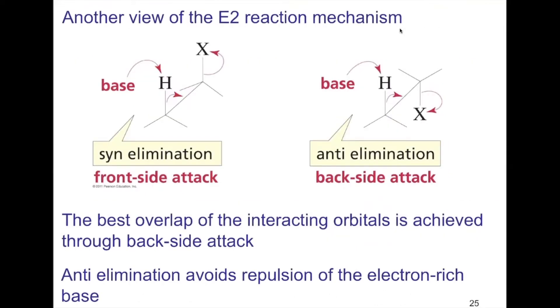Looking at the sawhorse projection might help you see what's happening. When the proton being pulled off and the leaving group are on the same side, it gets crowded with the negatively charged base on the same side as the negatively charged leaving group. This doesn't work.